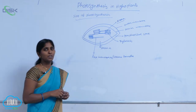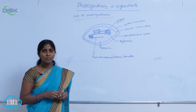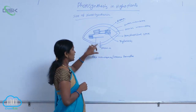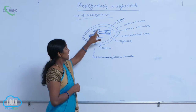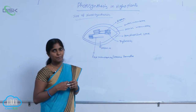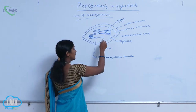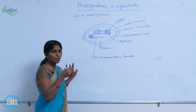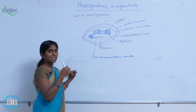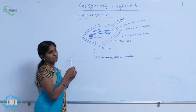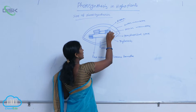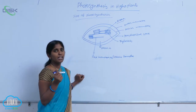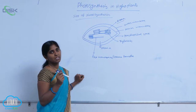The stroma is rich in enzymes — specifically the enzymes involved in the dark phase. Within the stroma, a membranous system is embedded; these embedded membranes are called thylakoids. The thylakoids are arranged like a stack of coins, and this stack of thylakoids is called grana. On the grana, the light phase of photosynthesis takes place.